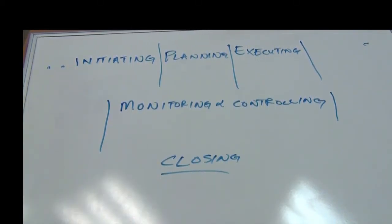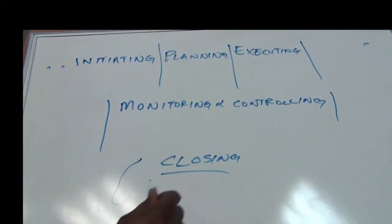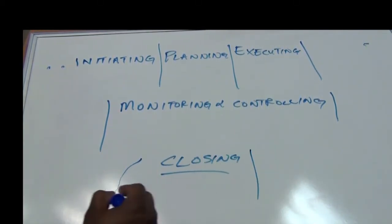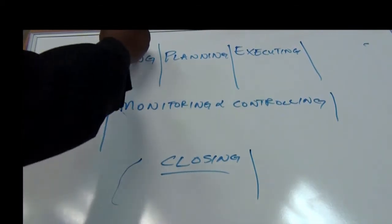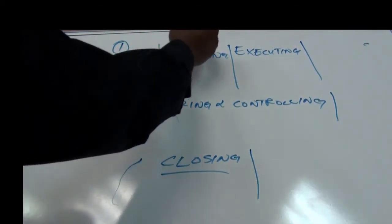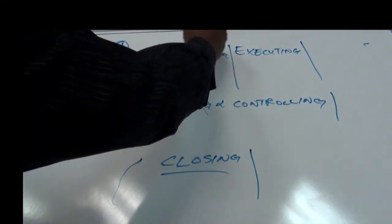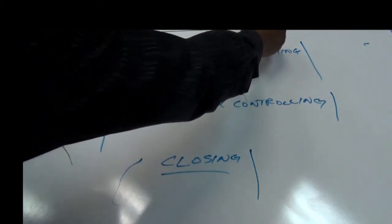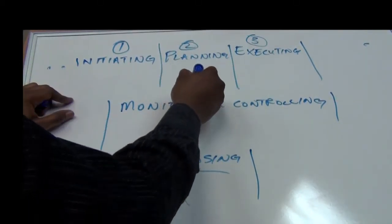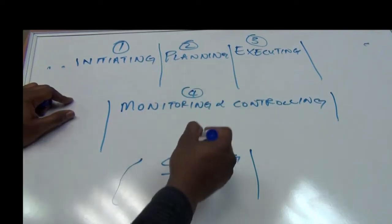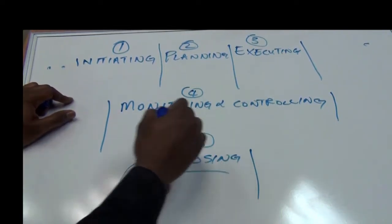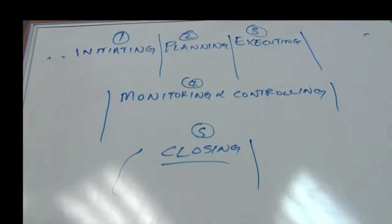Closing the project. So we have these five process groups: initiating, planning, executing, monitoring and controlling, and five — closing.